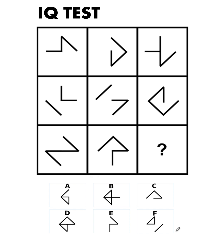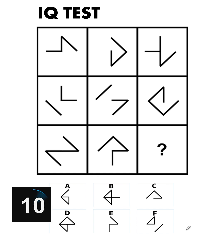Hey everyone, here's our IQ test for today. We are given three rows and three columns, and the first eight pictures are already given. We want to find the picture in the cell at the last column of the last row, and we are given six options. You can pause the video and see if you can solve this interesting IQ test.